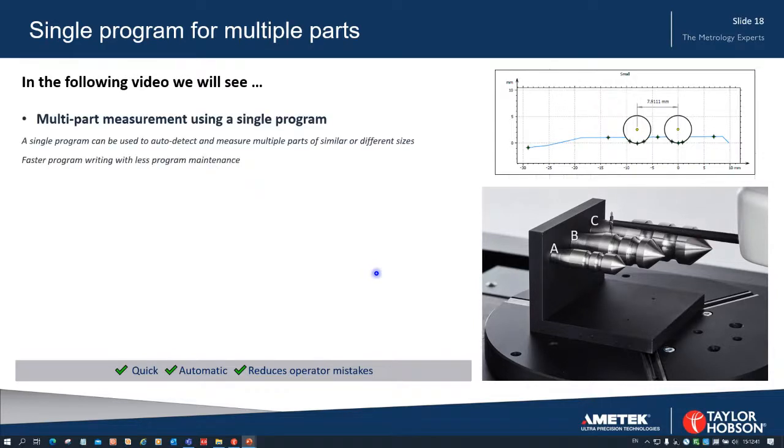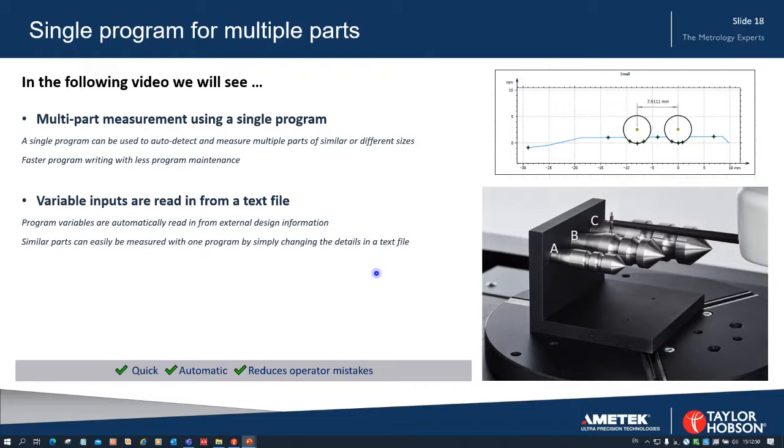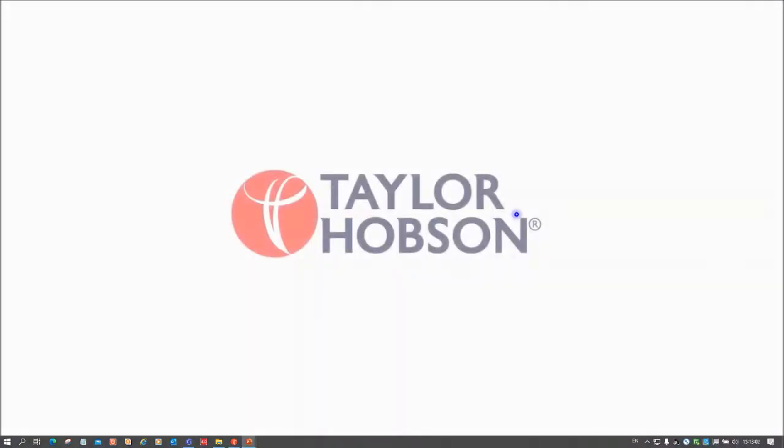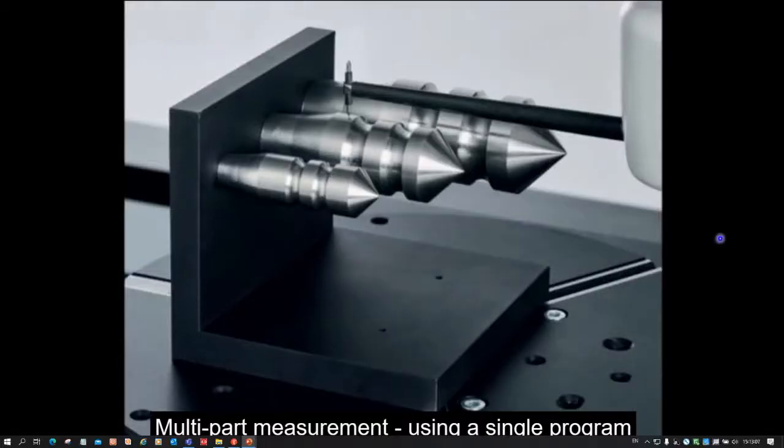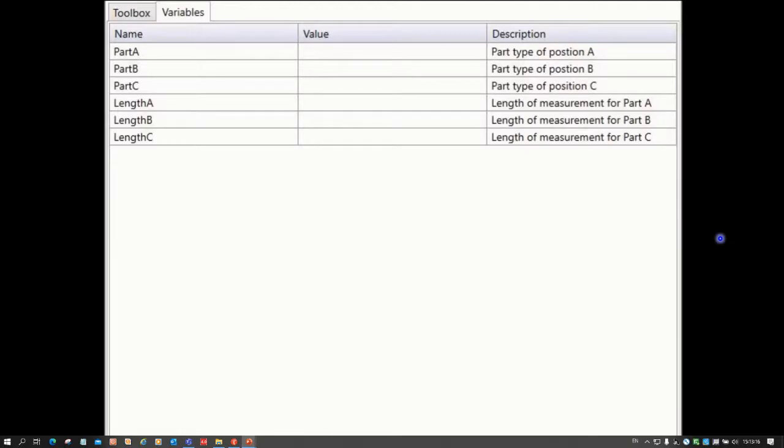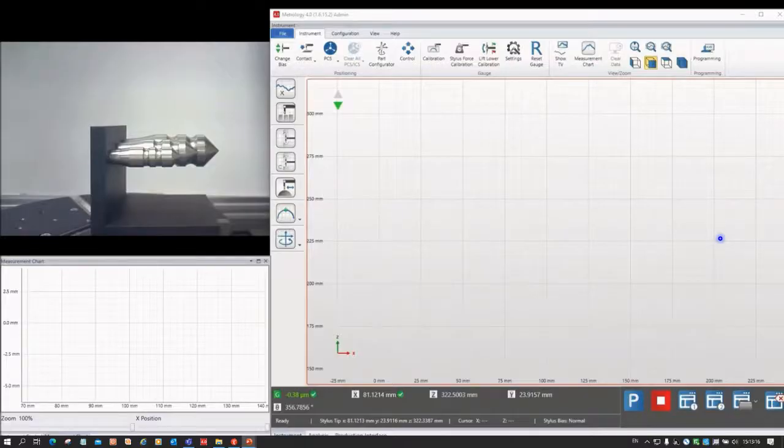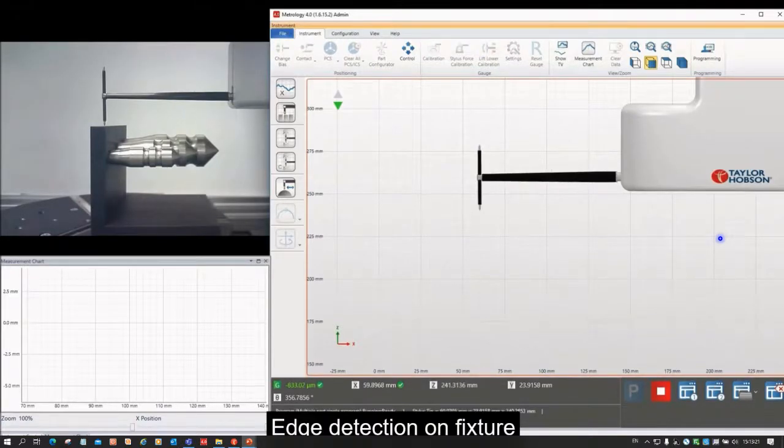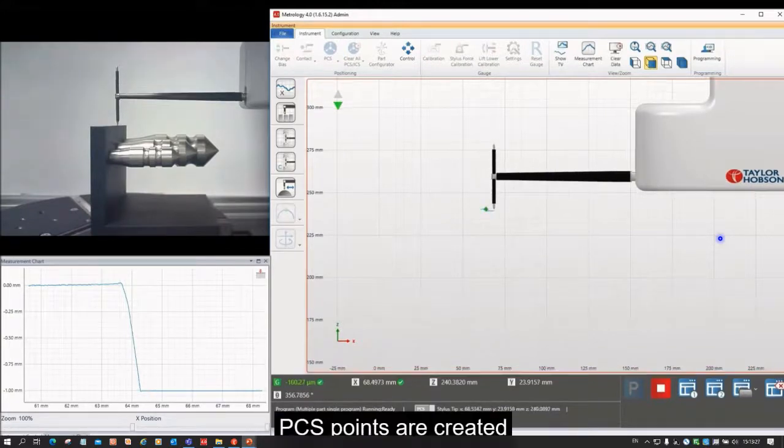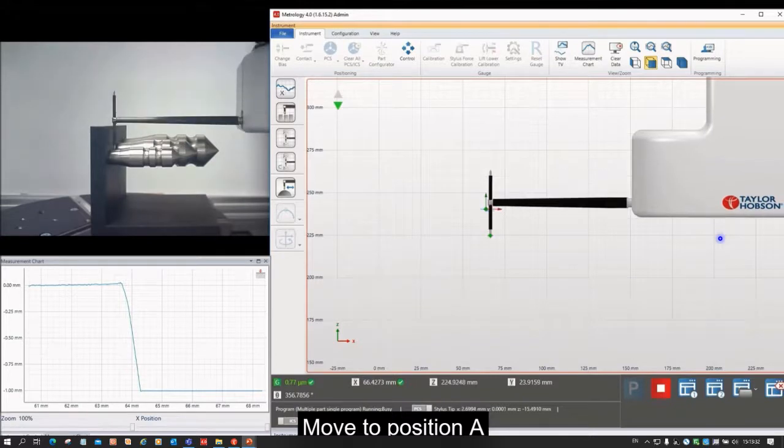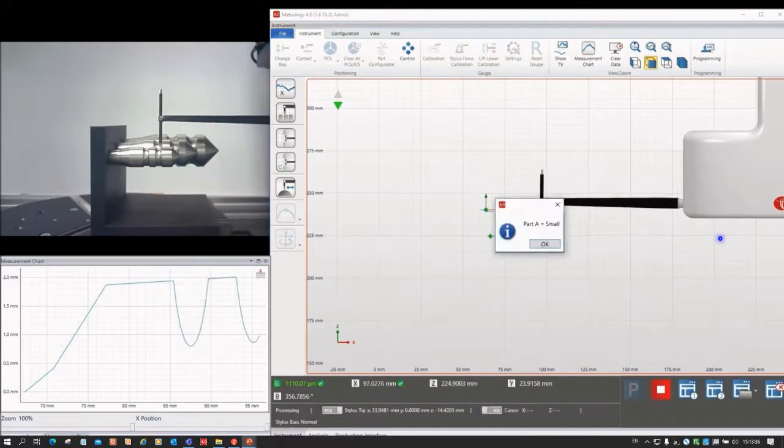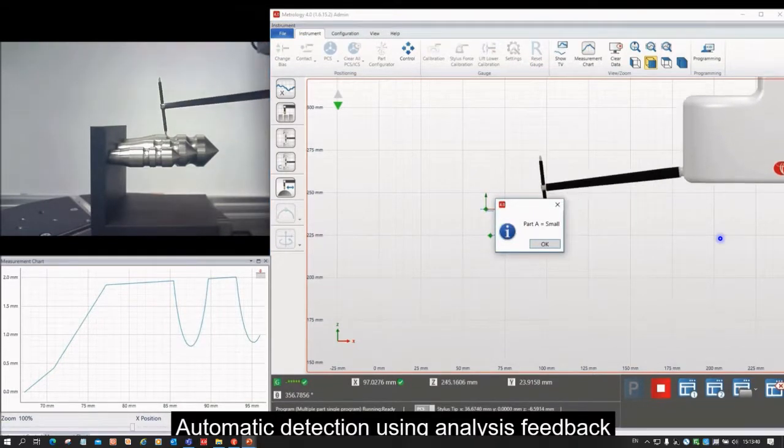So in this video we're going to see multi-part measurement using a single program. We're going to see how the variable inputs are read in from a text file, and then we're going to have a look at some of the analysis. So on the right here we've got the three parts - different sizes A, B, C - and we'll progress now through the video. So there are the three parts. And the first thing that happens is at the start of the program there's no variables there at all. And the stylus now references, in this case, off the edge of the fixture. In the top left you can see it, the part, and it takes a measurement of the part. It's going to move down now to position A, and it's going to measure that short measurement and it's identified that it's Part A, that it's a small part.